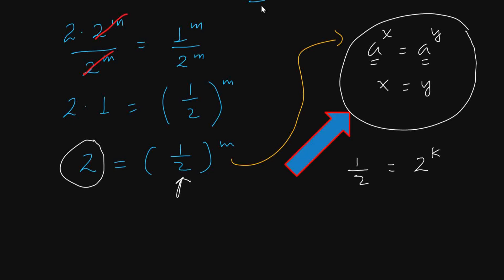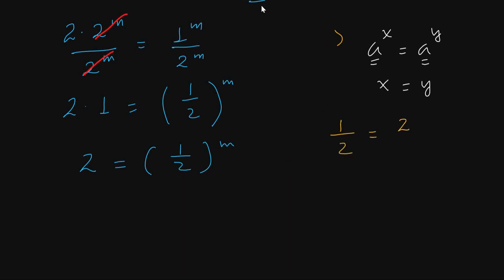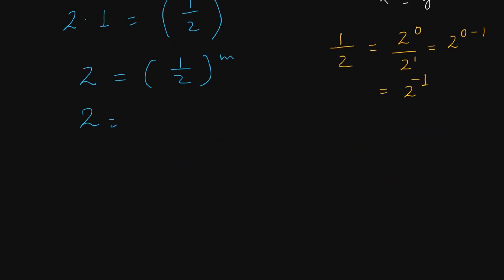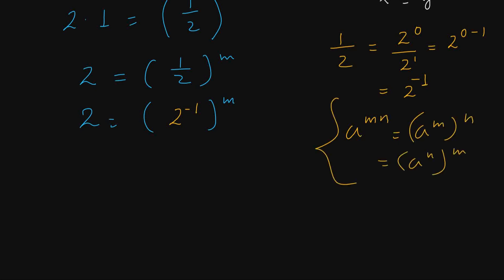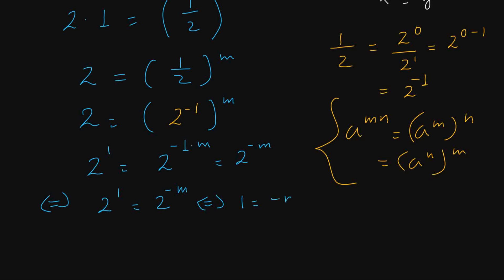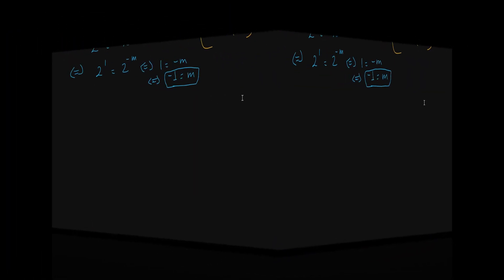Now, in this exponential equation, at this stage, if a to the power of x equals a to the power of y, and if the base is the same, then the exponents must be equal — x equals y. To use this rule, we need to change 1 over 2 to a power of 2. We know 2 to the power of zero is 1 and 2 to the power of one is 2, so 1 over 2 equals 2 to the power of zero minus one, which is 2 to the power of minus one.